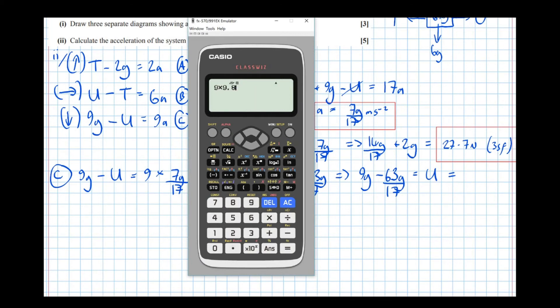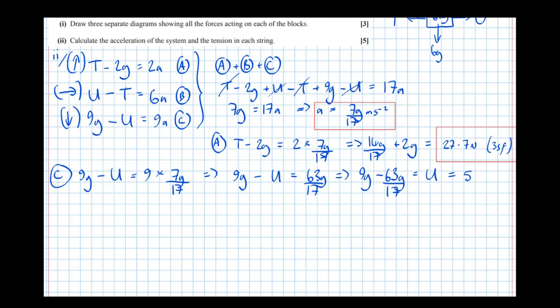9g take 63g over 17 equals 51.9 newtons, 51.9 newtons to 3 significant figures. And let's put a box around that.